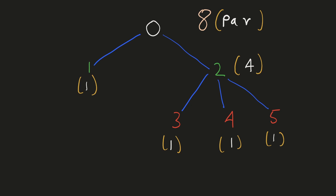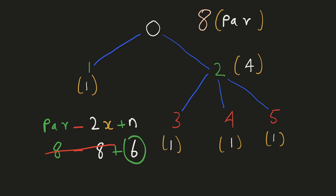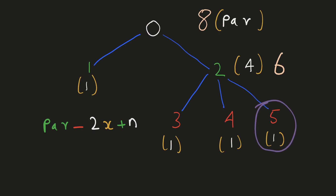To solve this efficiently, we can consider node 0 as the root of the whole tree, calculate its result, and then for each node calculate the length of its subtree. Once we have that, we start from the top and using our formula calculate the result for each child node. The result for node 2: its parent result is 8, the number of nodes in its subtree is 4, so we subtract 4 and add the total number of nodes, giving result 6. Then for node 5, its parent result is 6, the subtree size is 1, so we subtract 2 and add 6, giving result 10.